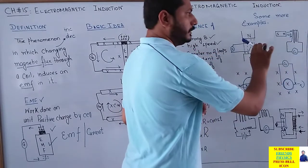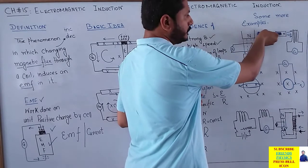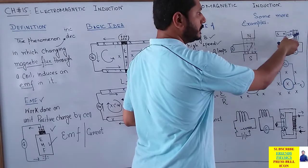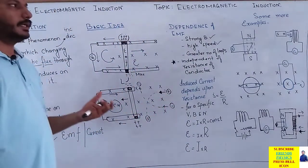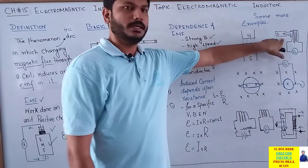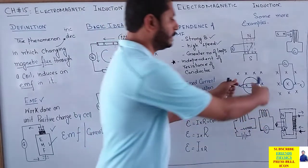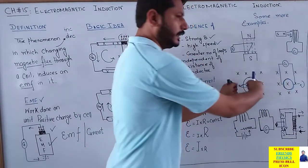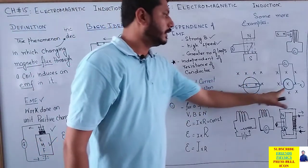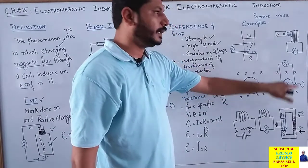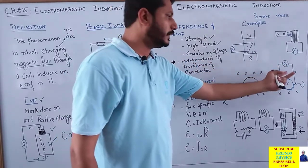دوسری example: coil rest پر ہے، magnet یہاں رکھ کر کھڑے ہیں تو کچھ change نہیں ہو رہا — no flux is changing۔ Magnet کو forward move کریں تو flux increase کرے گا، EMF اور current induce ہوگا۔ Magnet کو دور لے جائیں تو بھی magnetic flux میں change ہوگا اور EMF and current induce ہوگا۔ اسی طرح coil magnetic field میں placed ہے — اسے کھینچ کے area کم زیادہ کریں تو flux change ہوگا اور current induce ہوگا۔ ایک loop کو magnetic field میں rotate کریں تو area کے change ہونے سے flux change ہوگا اور EMF induce ہوگا۔